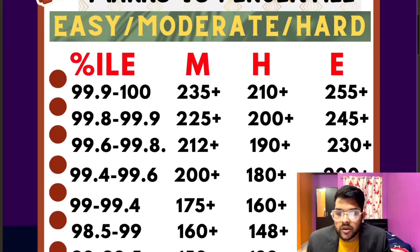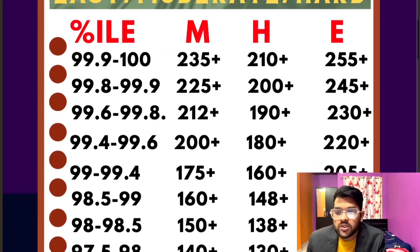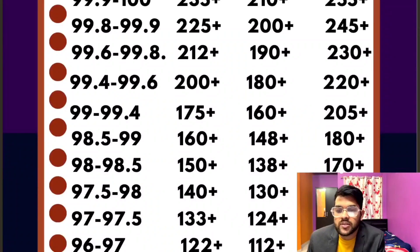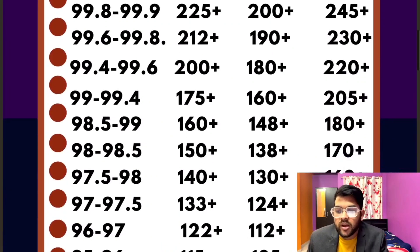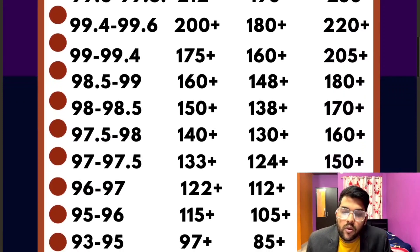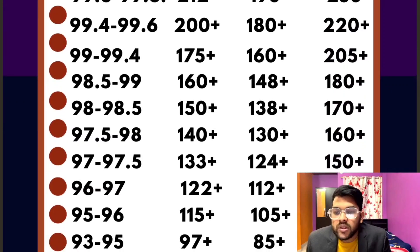For 98.5 percentile you need 180 marks, for 98 it is 170, for 97.5 it is 160, for 97 it is 150+, for 96 it is 140+, for 95 it is 130+, and for 93 percentile it is 115+ marks.